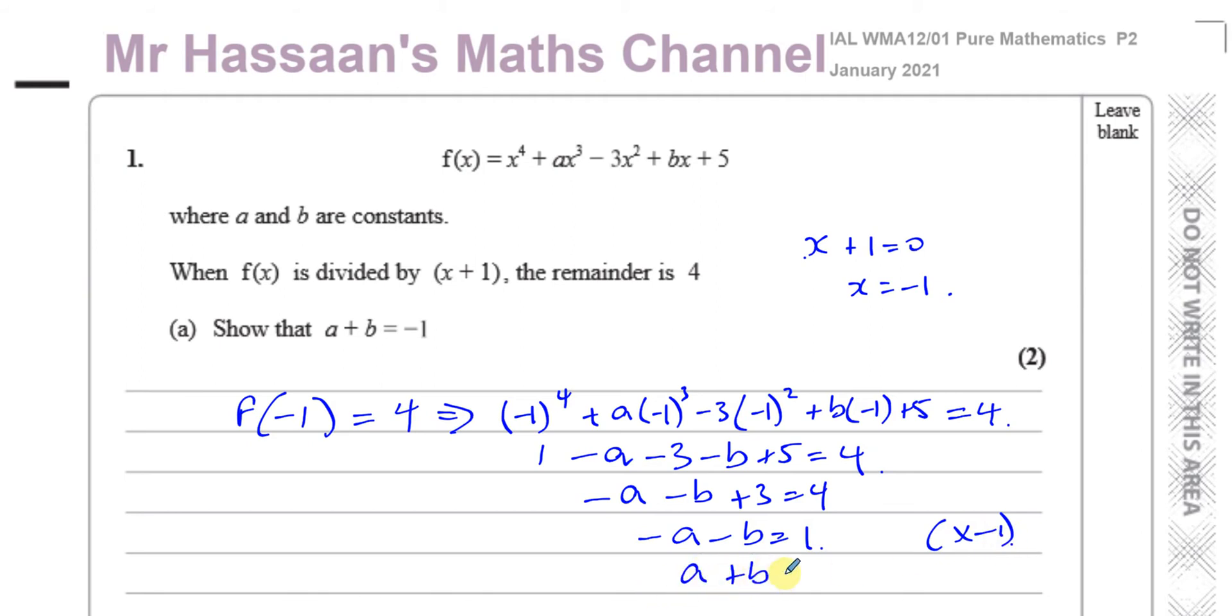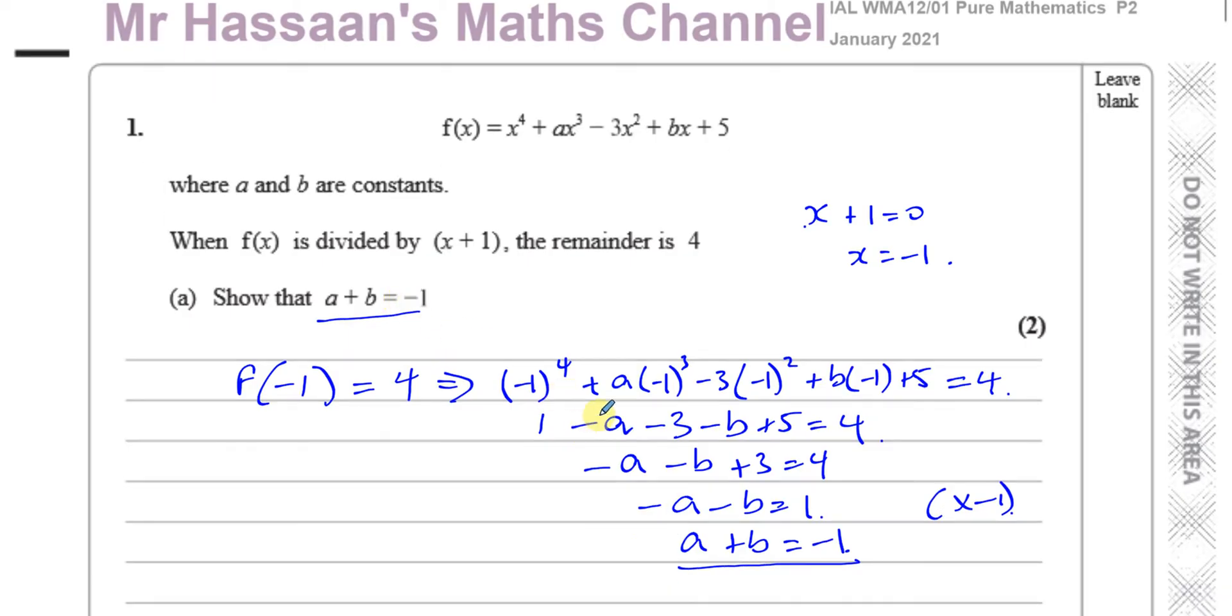And they want to write it in this form. We've actually got the same thing. If we multiply both sides by -1, you'll end up with a + b = -1, which is what we had to show. It's important to show steps when they ask you to show something. You should show the steps quite clearly so that you don't lose any marks.